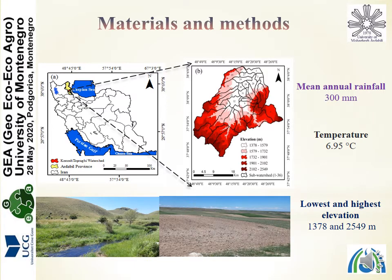The Pusatoprogli watershed located in the north-western Iran is selected as a case study. The mean annual rainfall of this study watershed is 300 mm and the mean annual temperature is about 7°C.